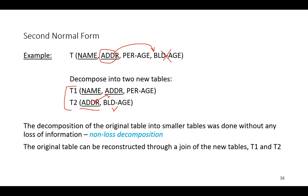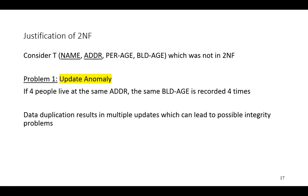The original table can be reconstructed by using an SQL operation referred to as a join. This is necessary because if we don't satisfy second normal form and retain that partial dependency, we experience anomalies. First, an update anomaly: if four people live at the same address, the same building age would be recorded four times. Because building age is recorded for each combination of name and address, data duplication means if we need to update that age, we have to update it multiple times — and failing to do so creates possible integrity problems and inconsistency of our data.